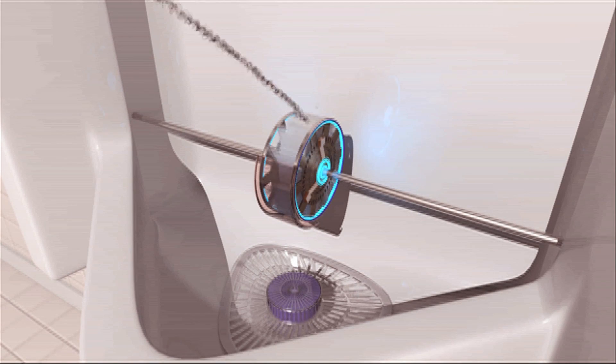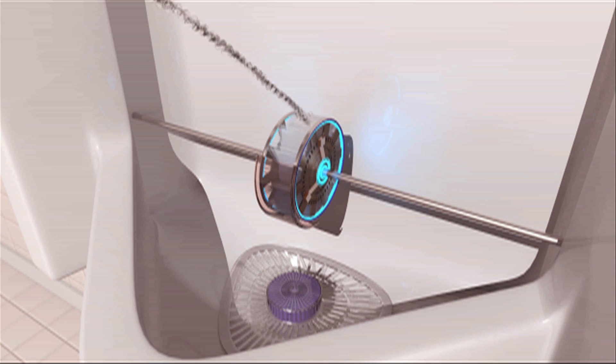It's been proven that giving a man something to aim for in the urinal reduces overall splash back and leads to a cleaner, drier bathroom. Now with the Urbine, we bring that knowledge into the 21st century.